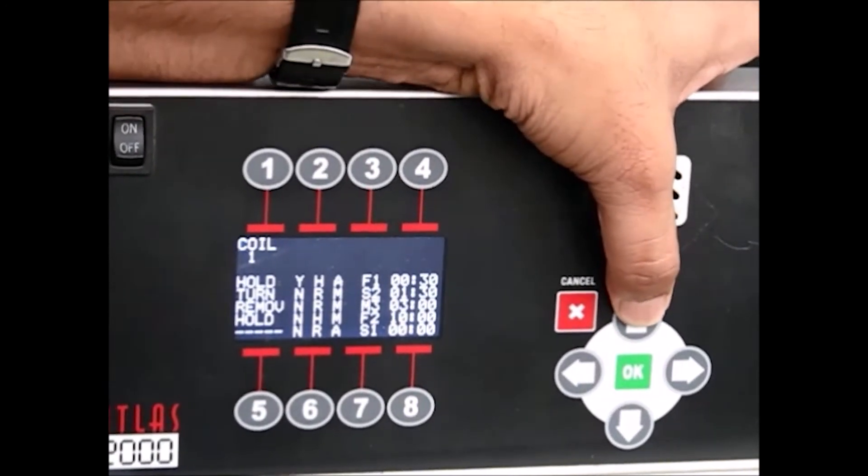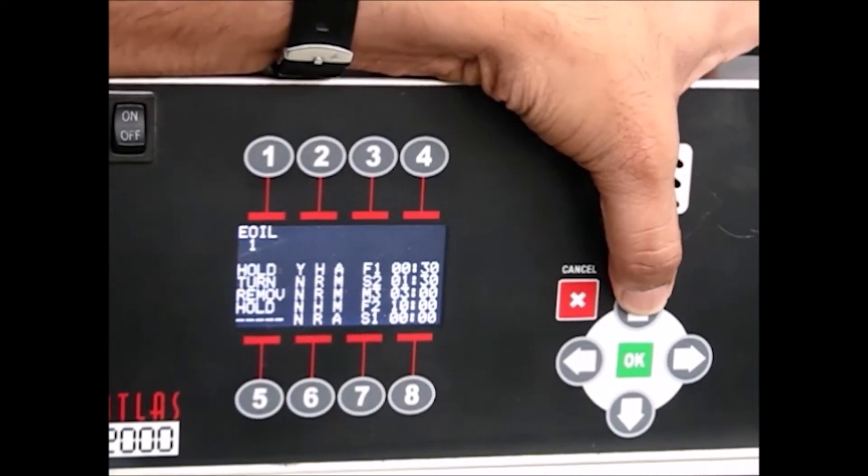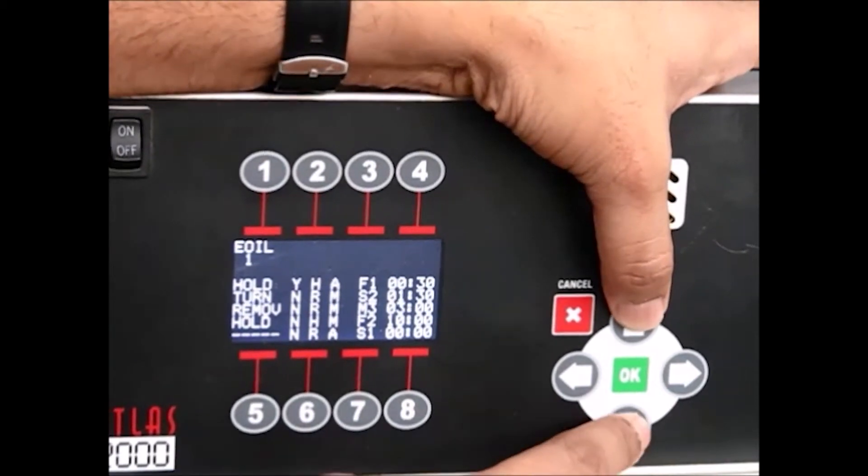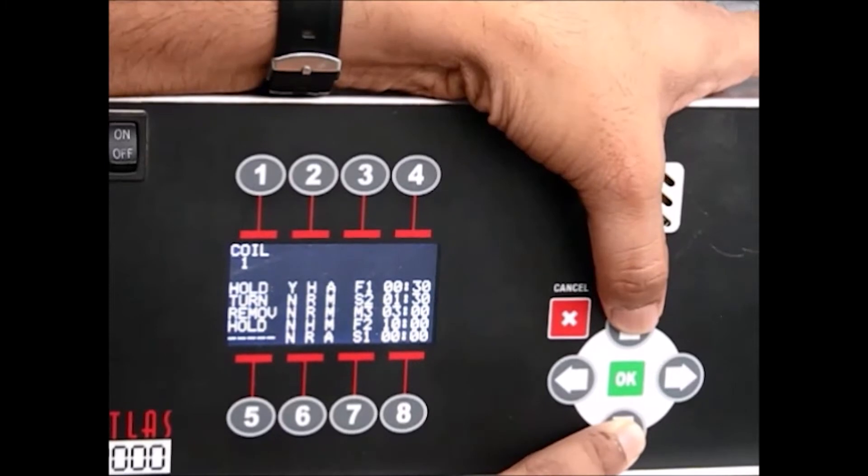To change characters, press the up or down arrow. For a blank space, scroll before 0. Press the left or right arrow to move to the next character. Press OK to complete the changes on each line.